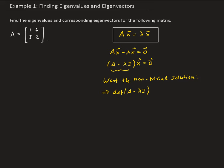We know X equals zero is always a solution, but we're interested in other solutions besides the zero vector — that's why we need this requirement. This is the foundation for how we find the eigenvalues and corresponding eigenvectors.